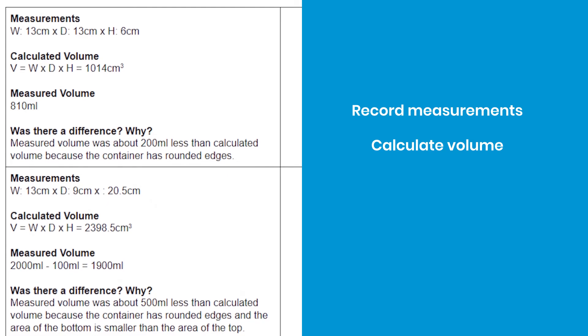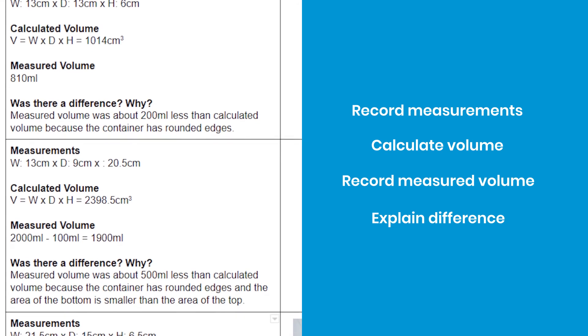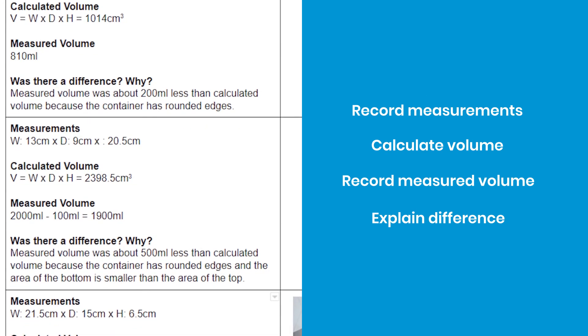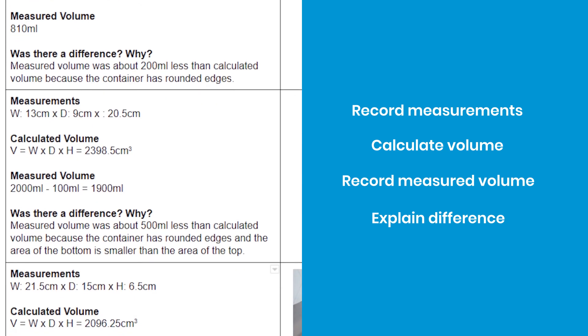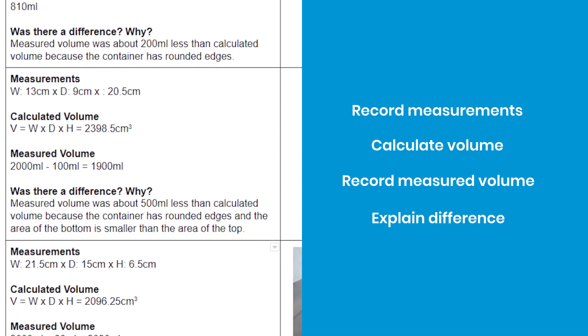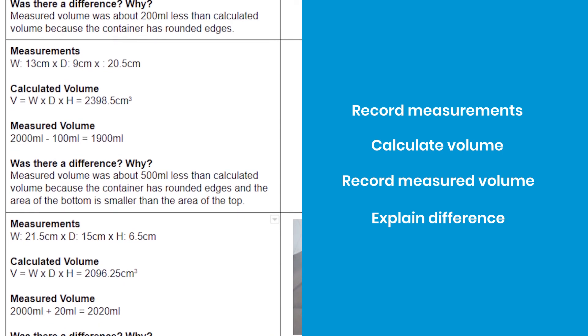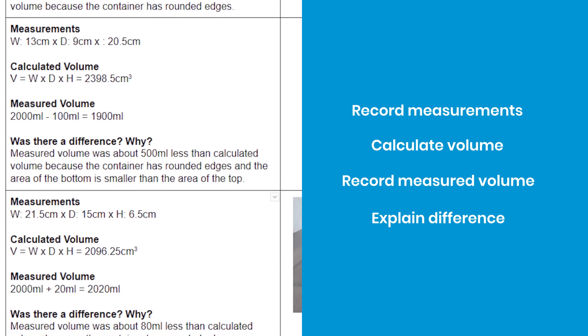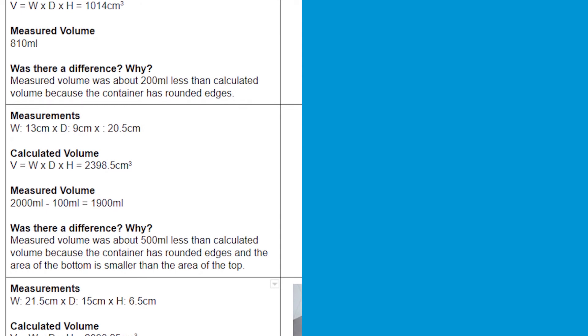So they should measure and record that measurement. Then they should calculate the volume before they measure it with water. And then they can record the measured volume next. And then you want to encourage them to talk about why was there a difference because there almost certainly will be differences. So I haven't written it here, but spillage is definitely a legitimate reason why there might be some differences, but also noticing things about the shape. So we calculated based on a shape with sharp sides that are fully the measurements we took. Whereas the measured volume of the actual amount of water that it held was less, but it's got curved edges there. So that's going to be volume that wasn't filled with water.